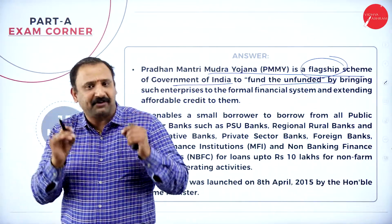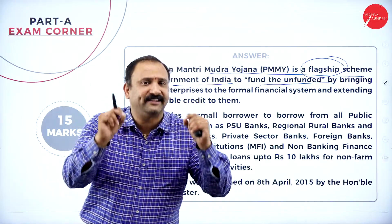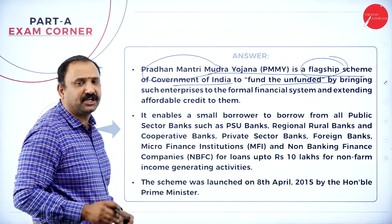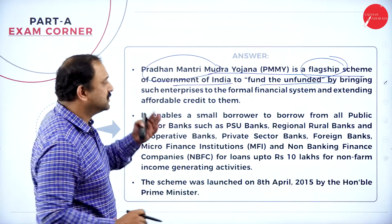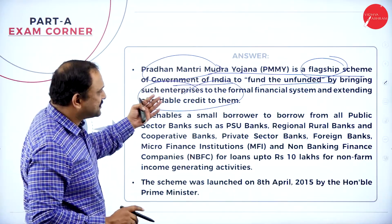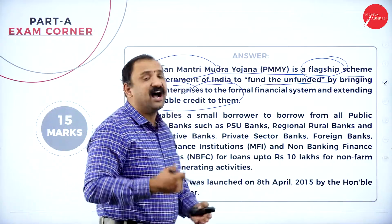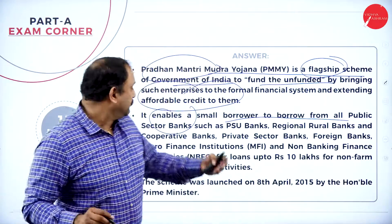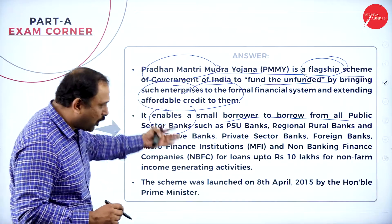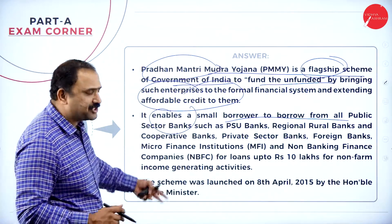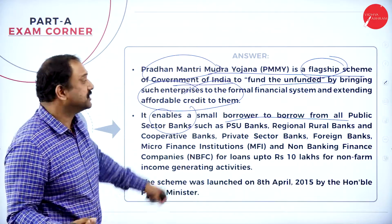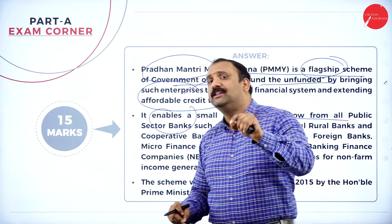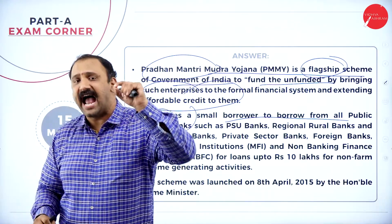Most entrepreneurs lack funds and don't get the necessary capital to start a business. The Pradhan Mantri Mudra Yojana creates a formal financial system extending affordable credit. It enables small borrowers to borrow from PSU banks, regional rural banks, cooperative banks, private sector banks, foreign banks, and micro financial institutions — all part of this Mudra Yojana. Include the NBFCs and service providers as well.